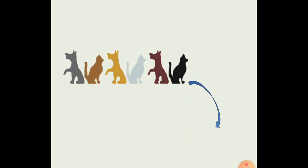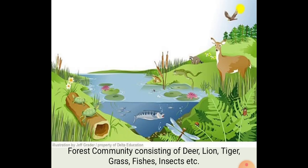Organisms can be any living animal. A group of organisms living together and interacting with each other is called a community. Imagine a forest — all organisms such as lion, deer, tiger, rabbit, and insects living in a forest form a community in a forest ecosystem.